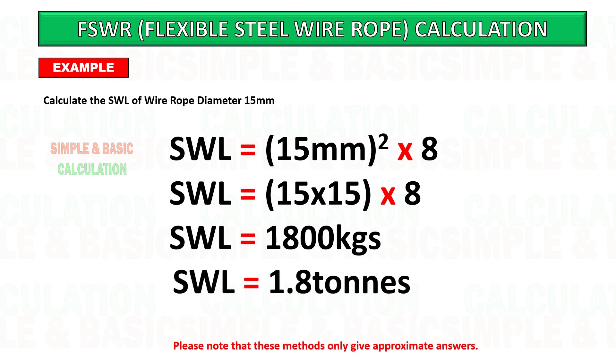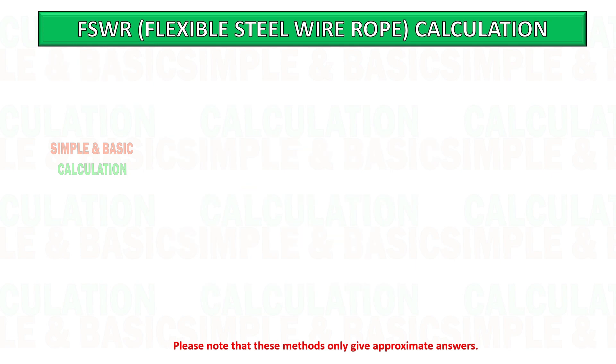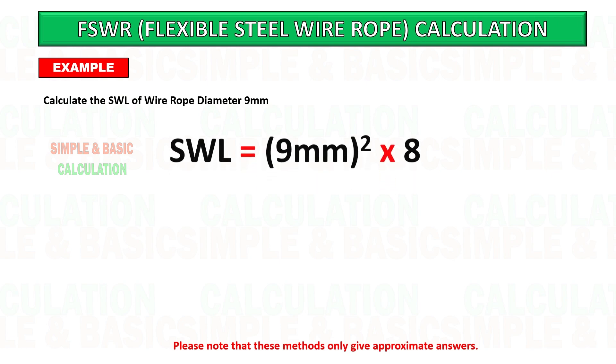You can pause the video and try to follow the calculation. Example number two: in this example, flexible wire rope diameter is 9 millimeter.